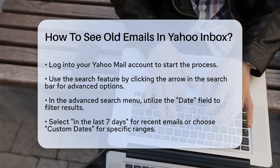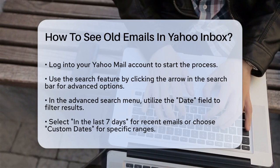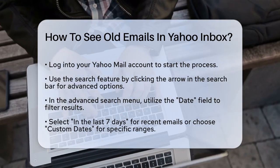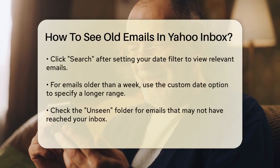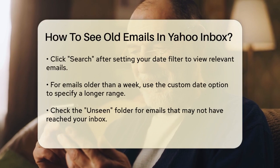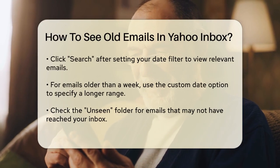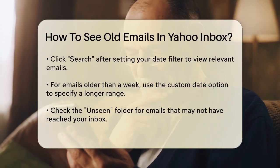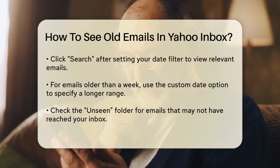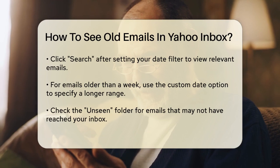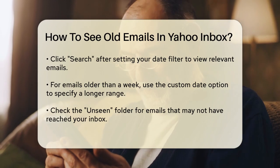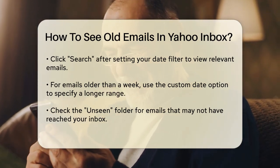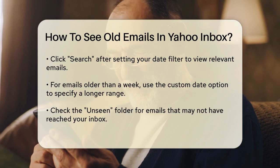If you need emails from a specific date range, you can choose custom dates and enter the exact dates you're interested in. After setting your date filter, click on search to see the emails that match your criteria. This will help you narrow down the results and find the emails you need quickly.